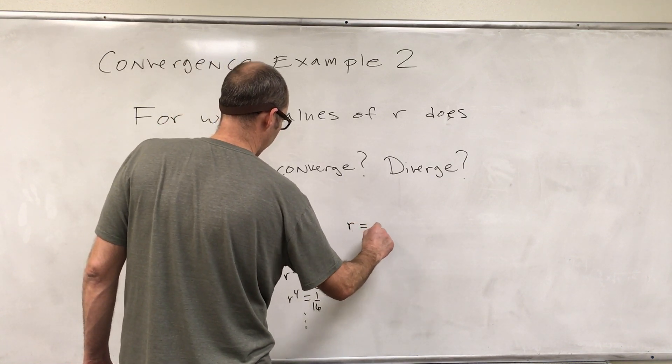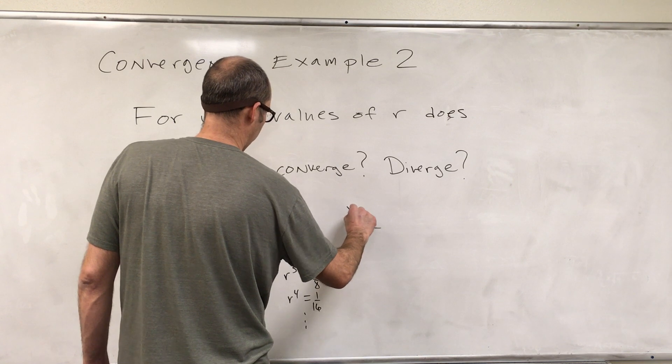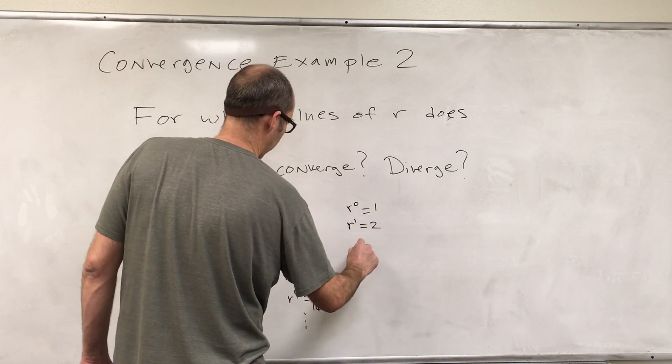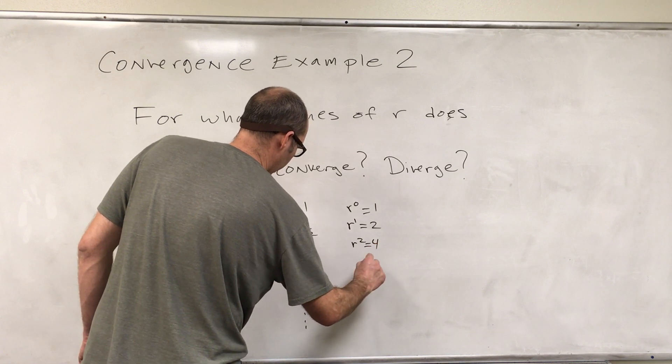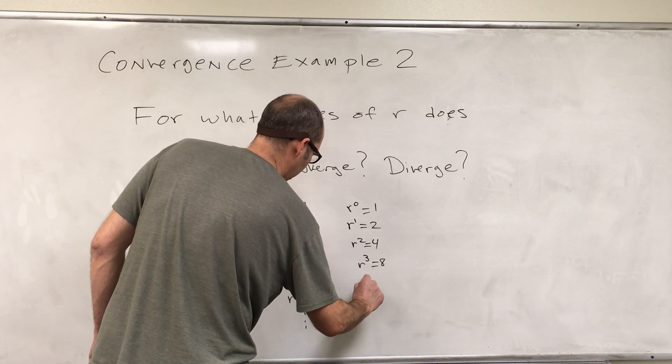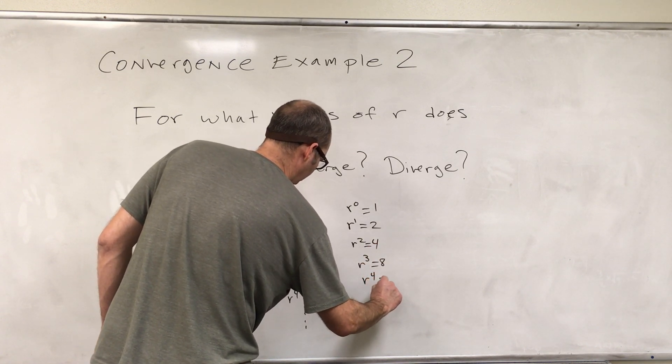Now let's say that R is equal to 2. Again, R to the 0 will be 1, but R squared will be 4, R cubed will be 8, R to the fourth will be 16.